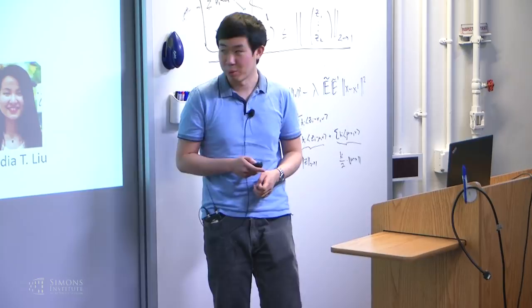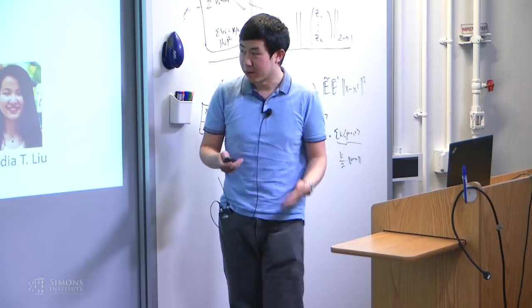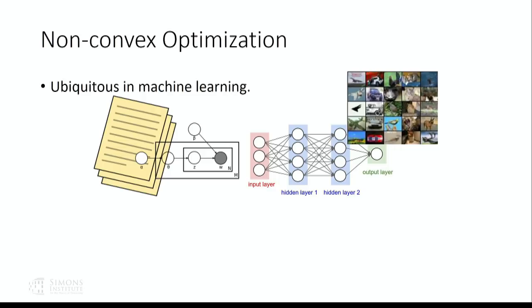Before talking about robustness, let's first look at why we care about non-convex optimization. Non-convex optimization is really used everywhere in machine learning, whether you are doing something more traditional like learning a probabilistic model, or you are doing deep learning as many other people are doing. Finding the right parameters for either the model or the neural network usually requires you to solve a non-convex optimization problem.